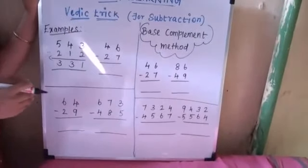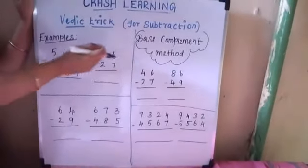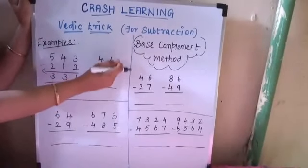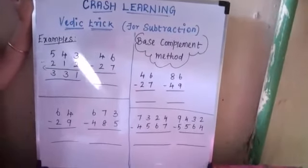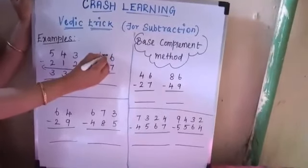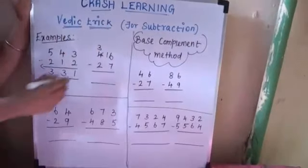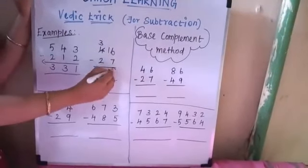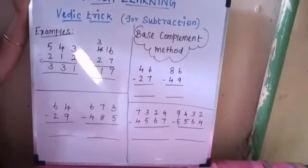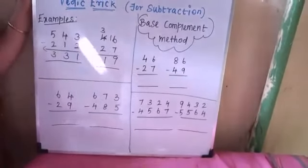Now go with another example: 46 minus 27. You can see 6 minus 7 is not possible, so in our school days, we used to borrow the values — that gives us 16. So 16 minus 7 is 9, then 3 minus 2 is 1. The answer is 19. Again, this is from right to left.